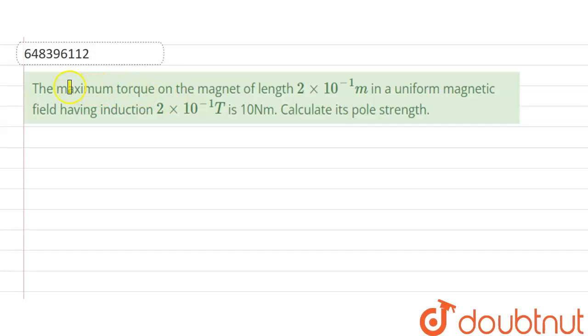Hello friends, our question is: the maximum torque on the magnet of length 2 × 10⁻¹ meter in a uniform magnetic field having induction 2 × 10⁻¹ tesla is 10 newton meter. Calculate its pole strength. We are asked to find out the pole strength of the magnet.